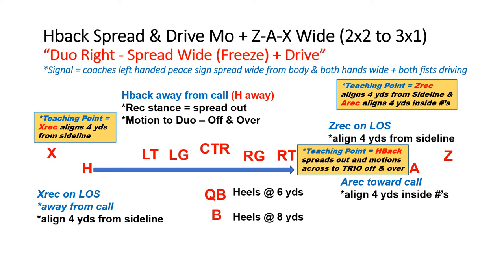If you want to use motion again — it's great to use the freeze — but we want to flip from a two by two over to a three by one. Simply use the drive call or signal: both hands and fists out front holding a steering wheel going up and down like you're driving a car. Now we're going to motion across and get to our trio set, square up to the line of scrimmage, slow down to a shuffle, and get to your original trio set by the time we snap the ball.